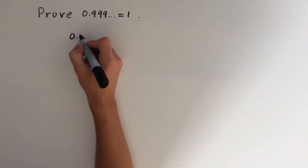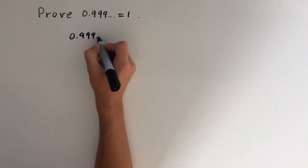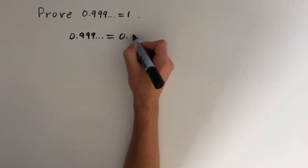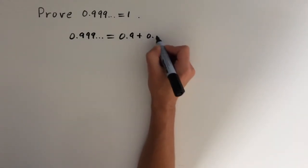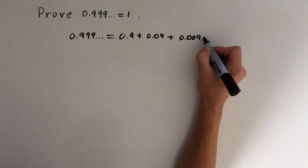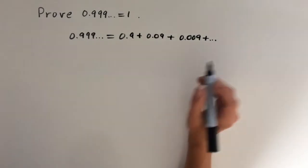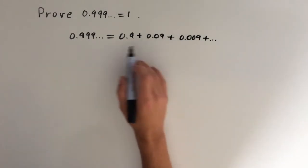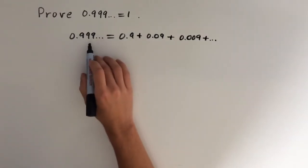So the way we do this is we express 0.9 recurring as 0.9 plus 0.09 plus 0.009 plus etc., all the way until infinity. So you can see that every term represents a single 9 in 0.9 recurring.